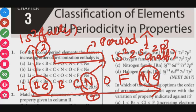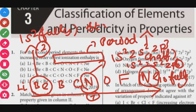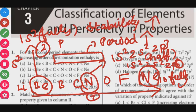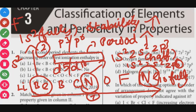Neon is atomic number 10 with configuration 1s2, 2s2, 2p6 — fully filled, completely stable. Stability is more for fully filled and half filled configurations: s1, s2 fully filled; p3 half filled, p6 fully filled; d5 and d10 half filled and fully filled; f7 half filled and f14 fully filled.